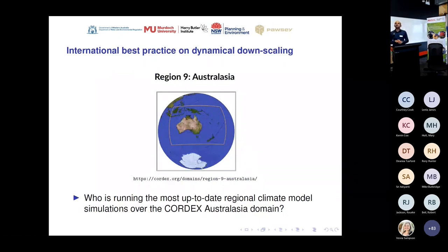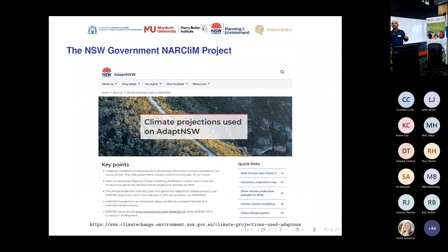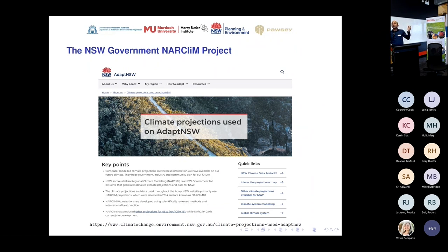Before you do dynamical downscaling, the first question you need to ask is: who is already doing this? Who in Australia is already simulating the entire Australian region? Because we don't want to repeat that if someone is already doing it — that would be duplication. Turns out, the NSW government is doing that. So we don't need to duplicate what they're already doing. As Kelly and I both mentioned, Murdoch has been a partner with the NSW government to help them deliver their latest projections, which is why we have a very strong partnership with them.